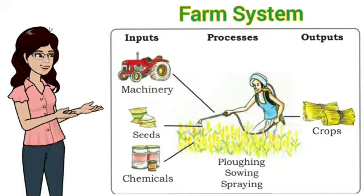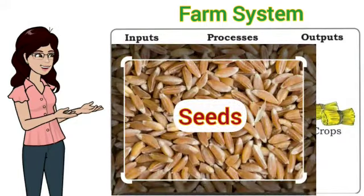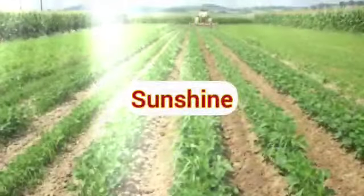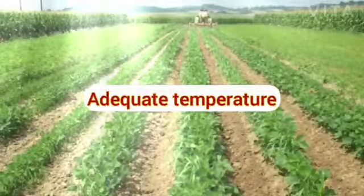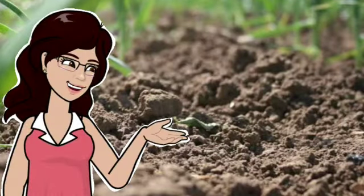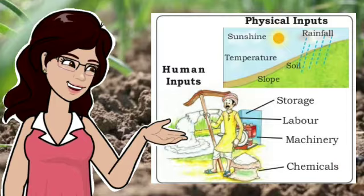The farm system includes inputs, processes, and outputs. Inputs mean all the things that are required to do agriculture, for example seeds, fertilizers, pesticides, machinery, labor, water, sunshine, rainfall, adequate temperature, and soil. These inputs can be classified into human and physical farm inputs. Labor, machinery, and chemicals are procured by human beings and are called human inputs, whereas sunshine, rainfall, temperature, soil, and slopes are provided by nature and are called physical inputs.